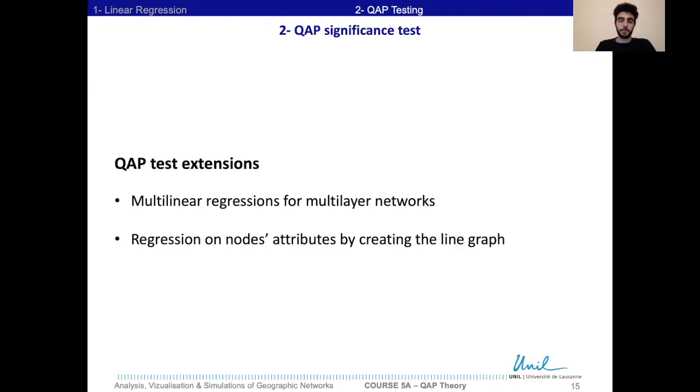Of course, for illustrative purposes we presented a simple case of simple linear regression, but of course the QAP can be used for multilinear regressions, for the case of multilayer networks, and also we can use the QAP test in order to test the significance of the correlation between two nodes attributes. But then we will have to use the line graph, because QAP usually is used on the links of the network.